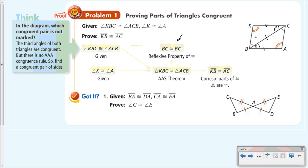We also know that KB is congruent to CA because they're corresponding parts. We used corresponding parts of congruent triangles are congruent. You can abbreviate this as CPCTC — corresponding parts of congruent triangles are congruent. No need to write more than you have to.